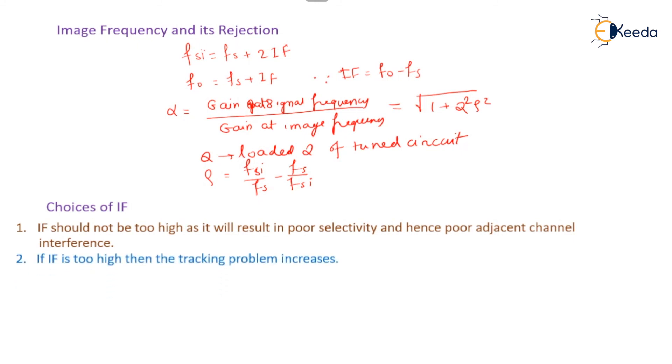If IF is low, it indicates poor adjacent channel interference and image frequency rejection becomes poor.